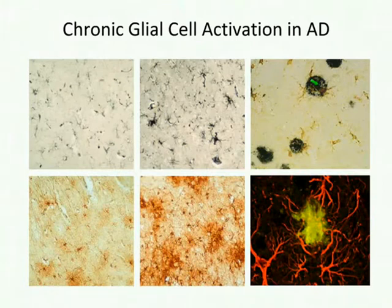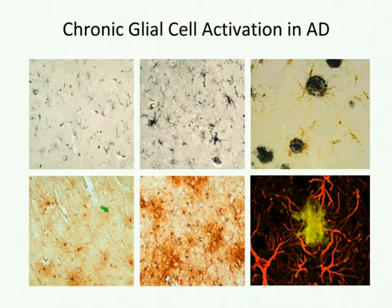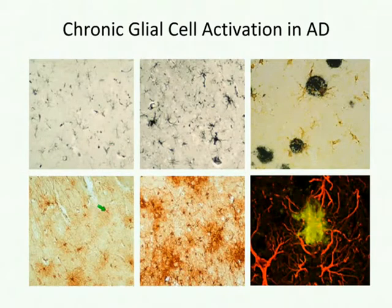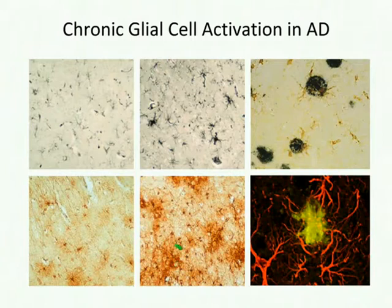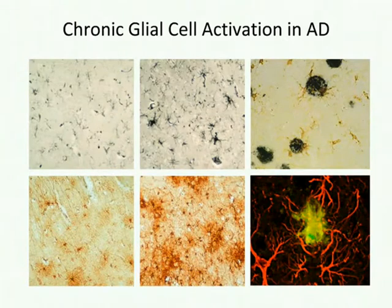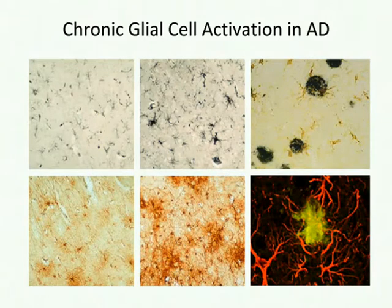To illustrate astrocyte activation, a slide shows astrocyte immunoreactivity with an antibody against glial fibrillary acidic protein (GFAP), a marker for activated astrocytes. In the brain of an 80-year-old individual who died without dementia, there is some activation, but in the Alzheimer's case, there are large clumps of activated astrocytes. In a dual stain with GFAP in red and fibrillar amyloid beta in green, the astrocytes, like the microglia, cluster around the A-beta plaques — an example of the chronic neuroinflammation in Alzheimer's disease.